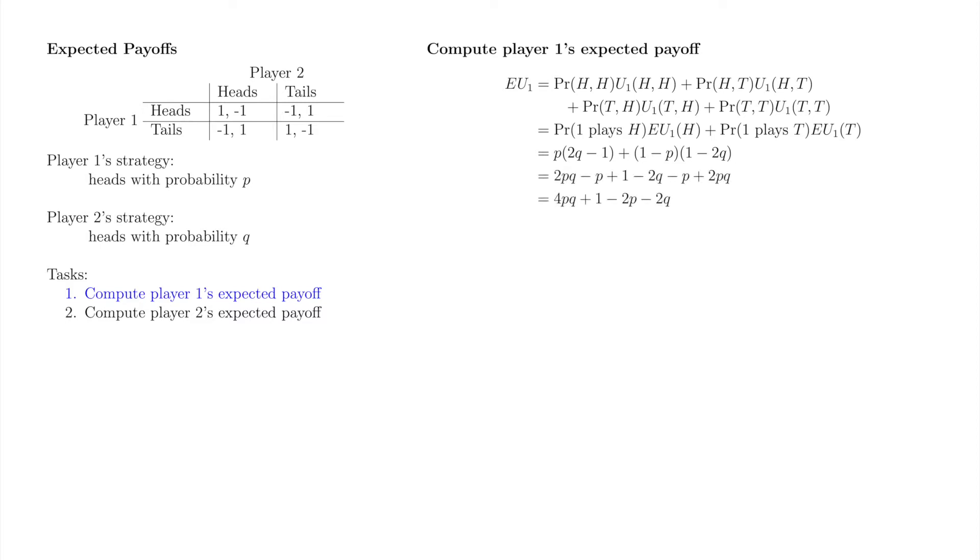After some algebraic tidying up, we obtain EU1 equals 4pq plus 1 minus 2p minus 2q.